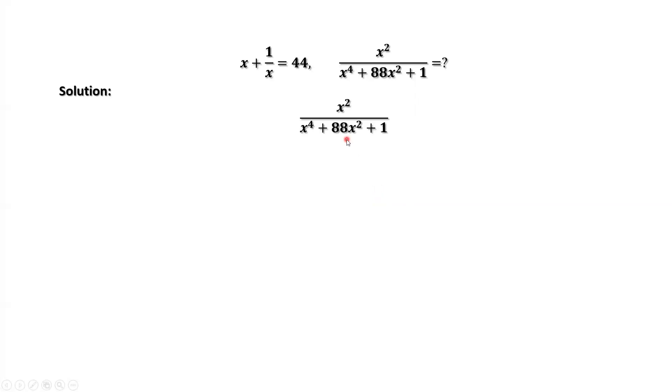This is what we want to find the value for. Both numerator and denominator divided by x squared. The numerator divided by x squared is 1. x to the power of 4 divided by x squared is x squared. 88 x squared divided by x squared is 88. 1 divided by x squared is 1 over x squared.